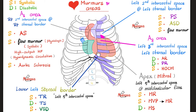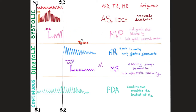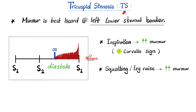Where is the best area to hear tricuspid murmurs — whether tricuspid stenosis or tricuspid regurgitation? You'll hear them best at the left fifth intercostal space at the left parasternal border, which is where the tricuspid valve is located. The murmur of tricuspid stenosis starts with an opening snap followed by a low-pitched rumbling murmur, and it is best heard at the left lower sternal border in the fifth left intercostal space. Because the tricuspid valve is on the right side, almost every right-sided murmur is accentuated by inspiration — tricuspid stenosis is no exception.